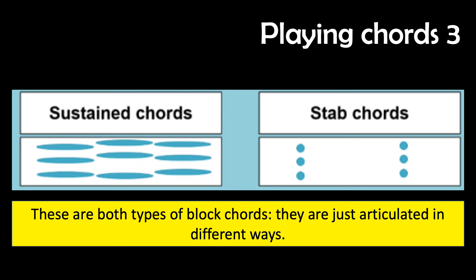Sustained chords are when the chords are held on. Here is an example from Vaughan Williams's Tallis Fantasia. Stab chords are when the chords are played with extreme staccato. Sustained chords and stab chords are both types of block chords — they're just articulated in different ways.